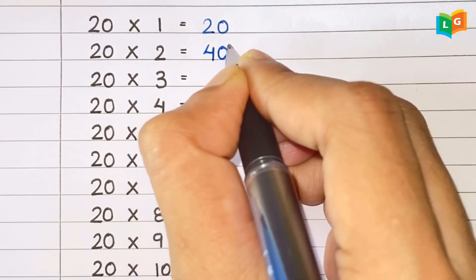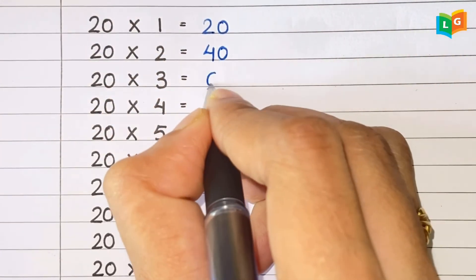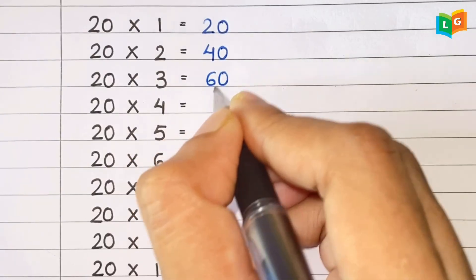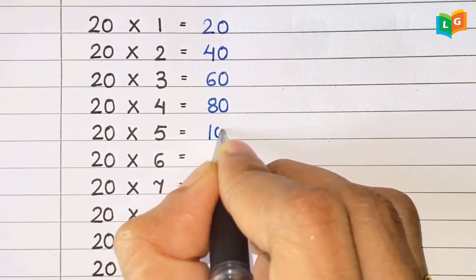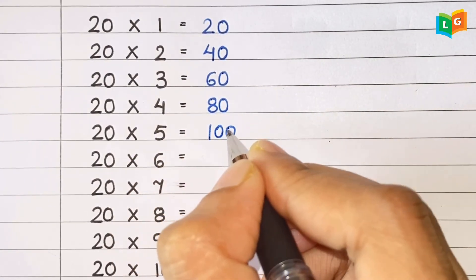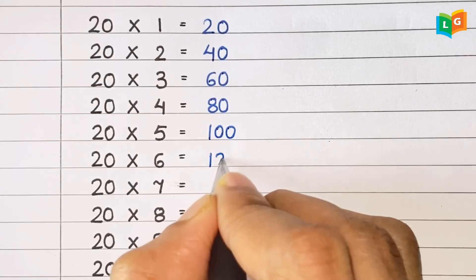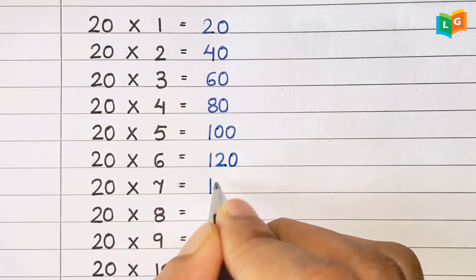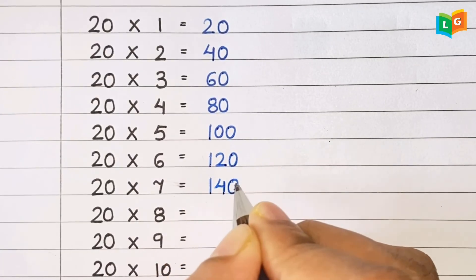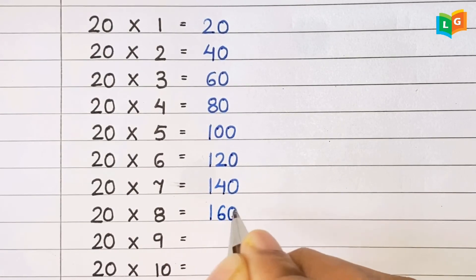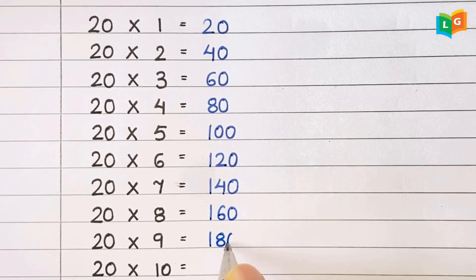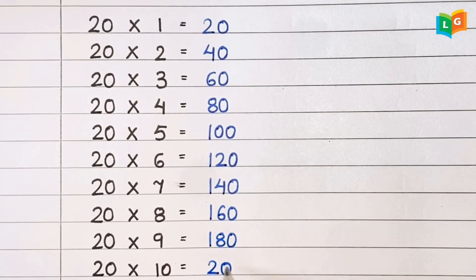Now let's see table of 20. 20 1s are 20, 20 2s are 40, 20 3s are 60, 20 4s are 80, 20 5s are 100, 20 6s are 120, 20 7s are 140, 20 8s are 160, 20 9s are 180, 20 10s are 200.